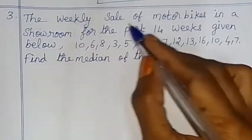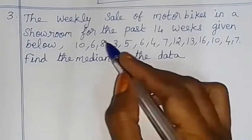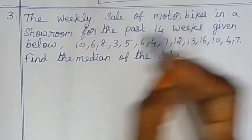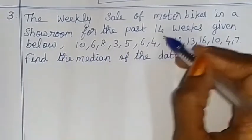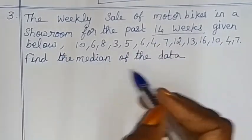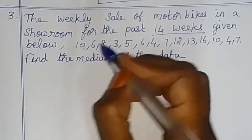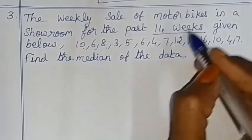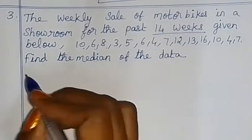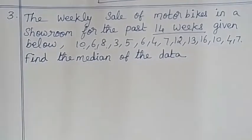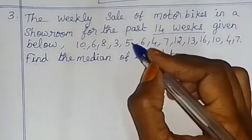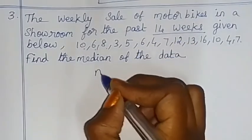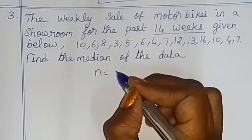The weekly sale of motorbikes in a showroom for the past 14 weeks is given below. In the first week, 10 sales; second week, 6; third week, 8. After 14 weeks we have data. Find the median. The number of data is 14 — so number of terms is 14.